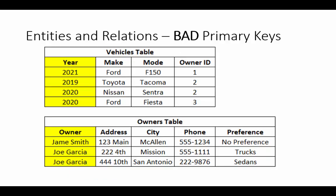Here are examples of bad primary keys. In the Vehicles table, using the year as a primary key would be very bad — what if we have two cars with the same year? Another bad example would be using owner names: what if we have two people with the same owner name?